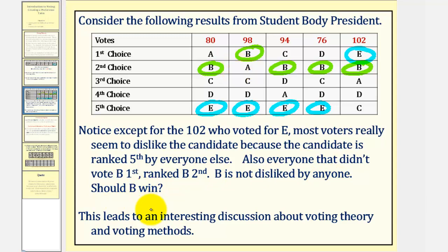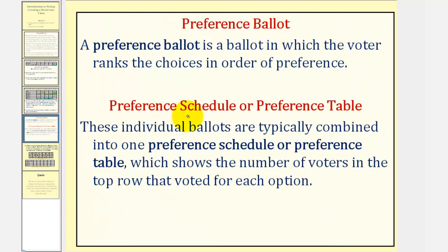It's situations like these that lead to interesting discussions about voting theory and voting methods. In this series of videos, we'll be discussing various voting methods, but for this introductory video, let's begin by defining a preference ballot and a preference schedule or preference table. A preference ballot is a ballot in which the voters rank the choices in order of preference. A preference schedule or table is when these individual ballots are typically combined into one preference schedule or table, which shows the number of voters in the top row that voted for each option.